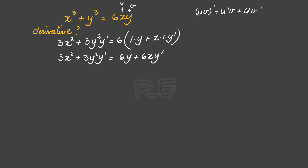The greatest common factor is 3, so we can divide both sides by 3. We have x squared plus y squared y prime equal to 2y plus 2xy prime.